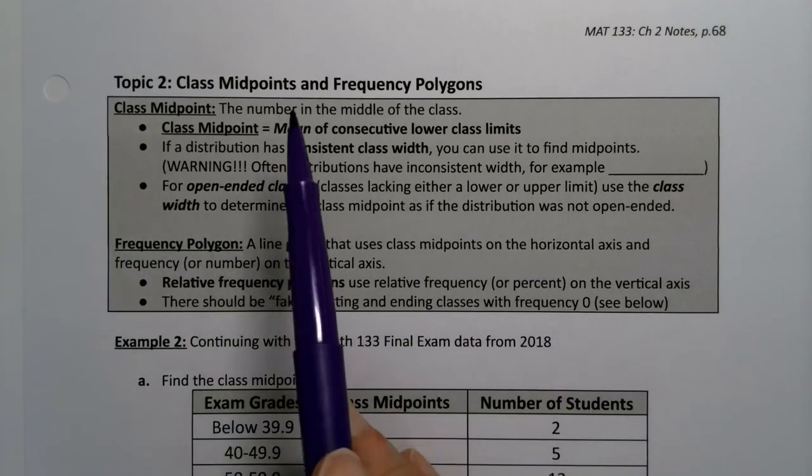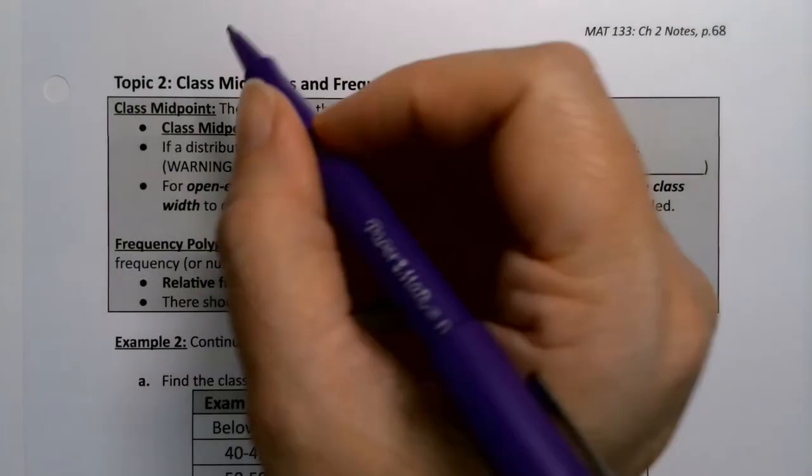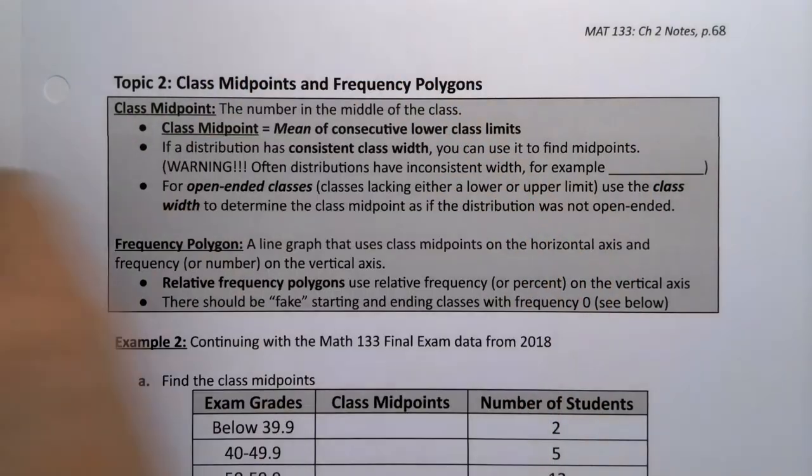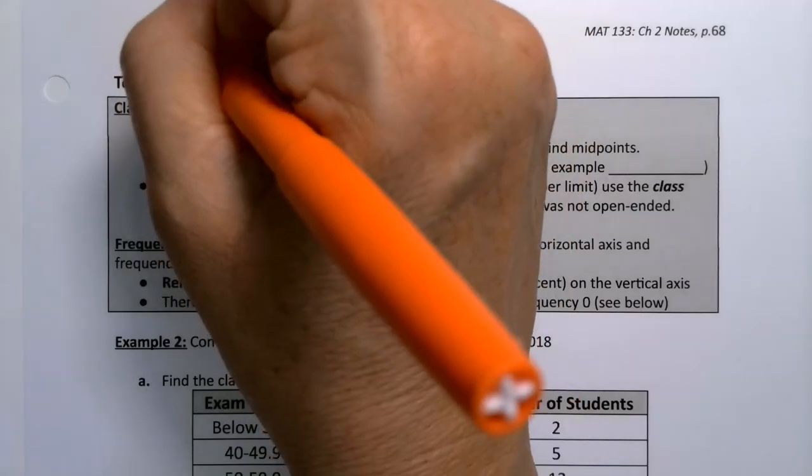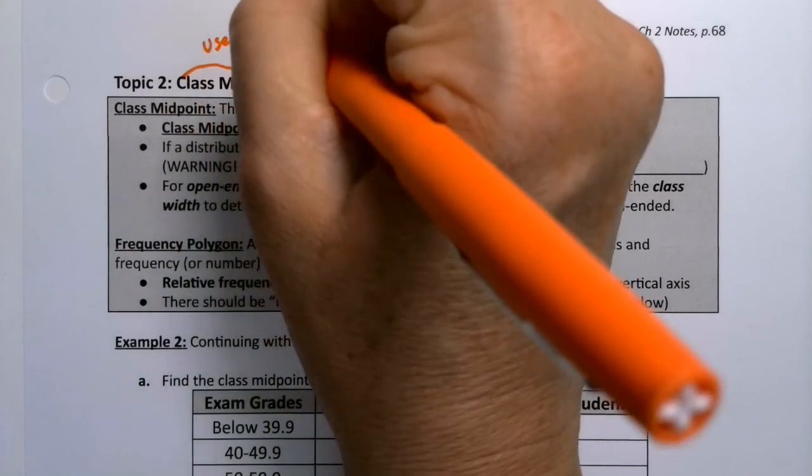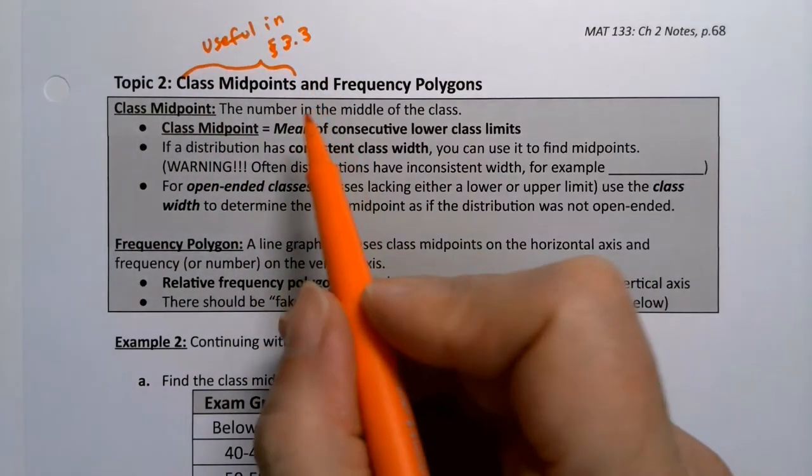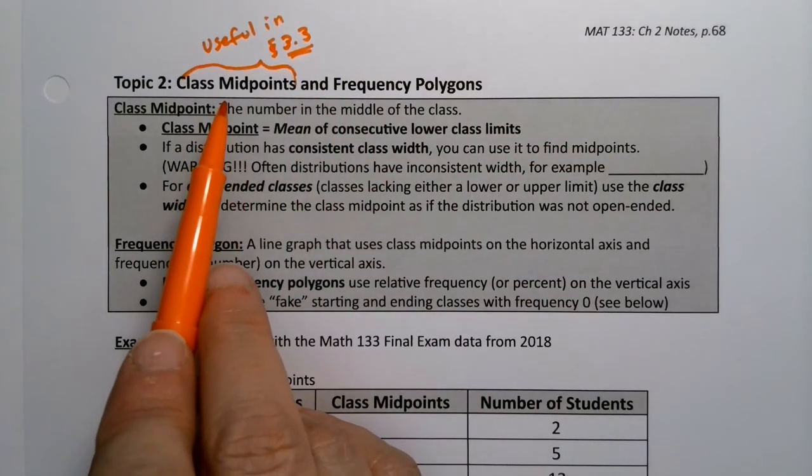In topic two, we want to discuss class midpoints and frequency polygons. Class midpoints, I'm just going to give you a little warning, these are very useful and important for section 3.3. So you will see these again, I promise you, 3.3 among other sections. So class midpoints are a big deal, a moderately big deal.